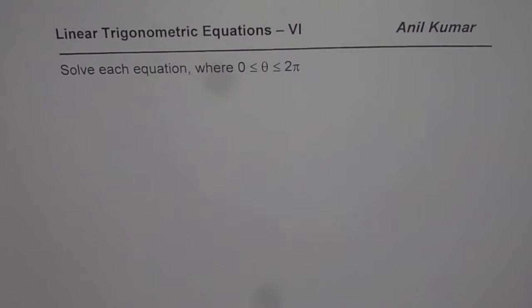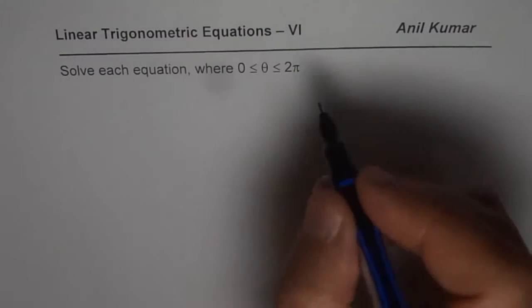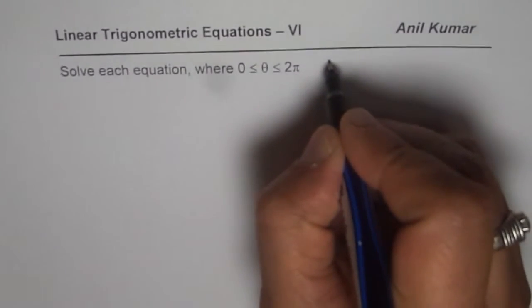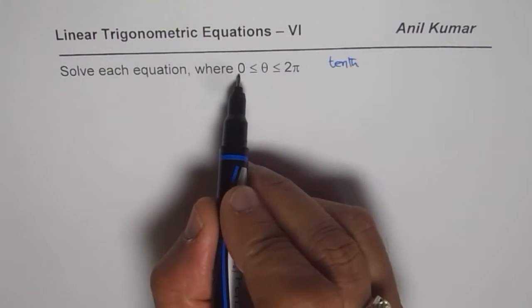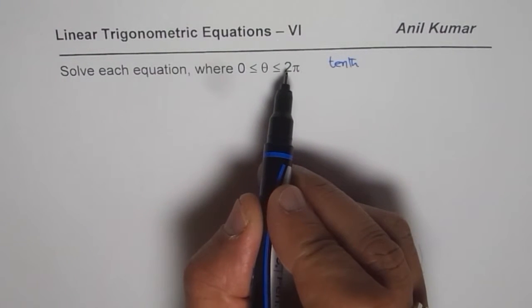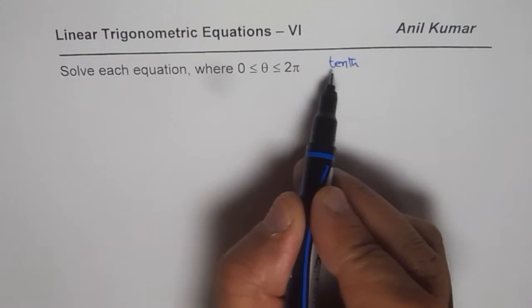Now let us solve some trigonometric equations involving secondary trigonometric ratios. Here we will write our answers to tenth place. We are considering theta within 0 to 2π and we will round all our answers to one decimal place.